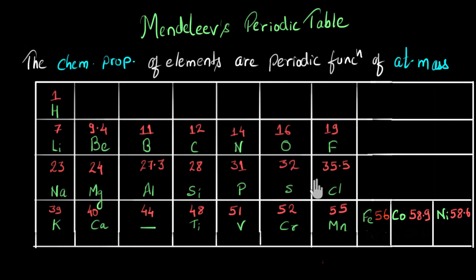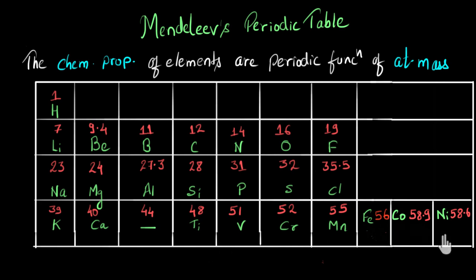For example, there were certain elements that could not fit the periodic table in the order of their atomic mass, such as cobalt and nickel. Cobalt's atomic mass is 58.9, which is heavier than nickel's 58.6. So technically cobalt should come after nickel, but cobalt was placed before nickel because cobalt's chemical properties were similar to the elements below it in that particular group, and Mendeleev could not explain this.